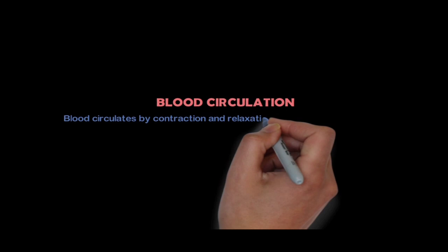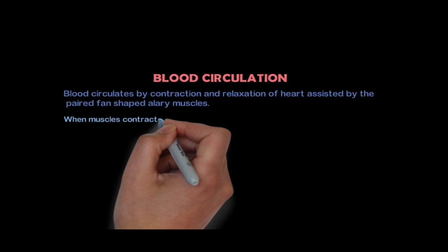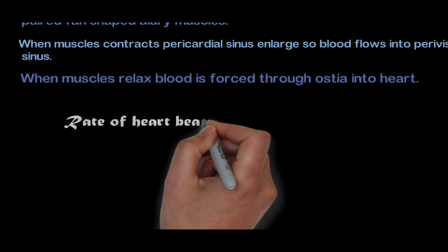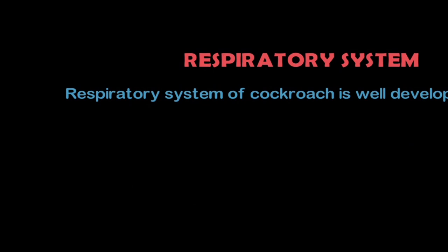Blood Circulation: Blood circulates by contraction and relaxation of the heart, assisted by paired fan-shaped alary muscles. When the muscles contract, the pericardial sinus enlarges so blood flows into the perivisceral sinus. When muscles relax, blood is forced through ostia into the heart. The rate of heartbeat of Periplaneta Americana is 49 beats per minute.